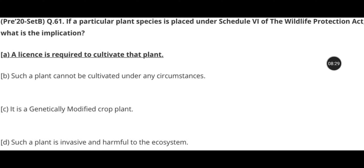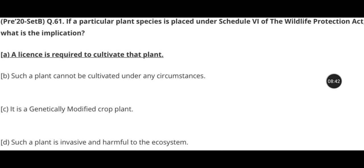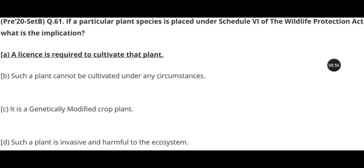Now a practice question: If a particular plant species is placed under Schedule 6 of the Wildlife Protection Act 1972, what are its implications? Options include: (A) License is required to cultivate that plant, (B) Such a plant cannot be cultivated under any circumstances, (C) It is a genetically modified crop, (D) Such a plant is invasive and harmful to the ecosystem. You can eliminate options C and D — the Pitcher Plant, for example, is an insectivorous plant, not an invasive one.